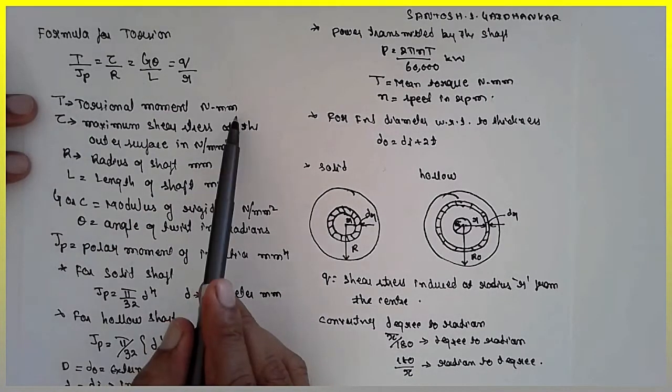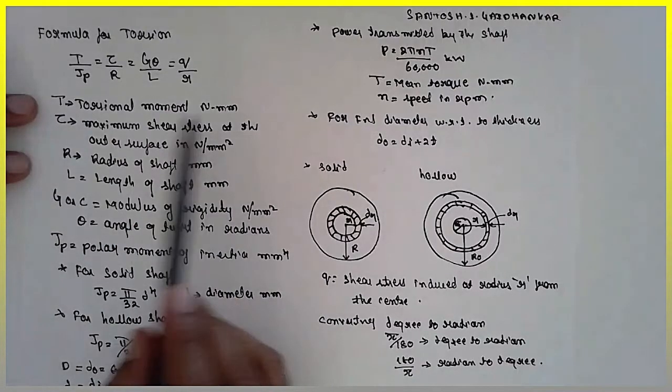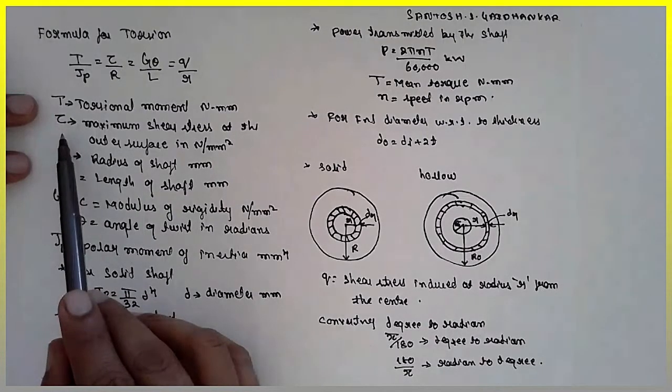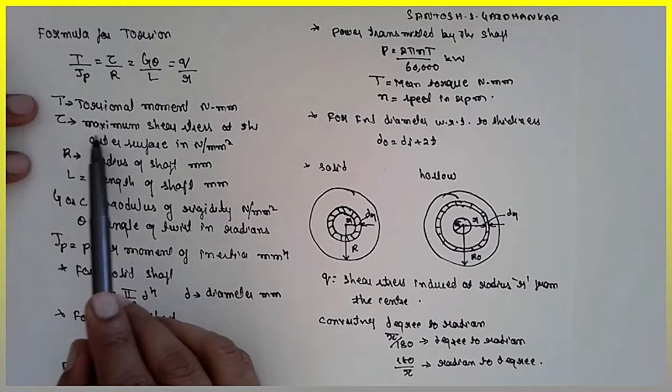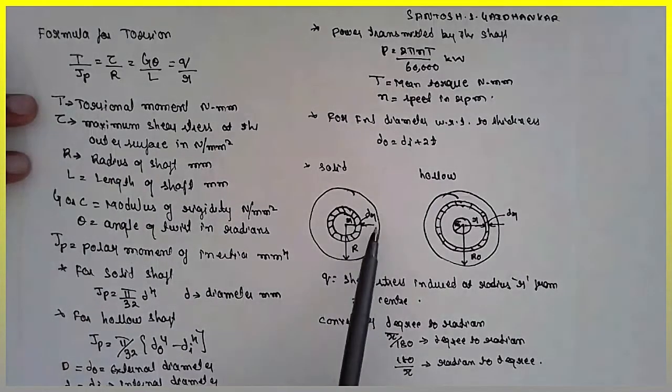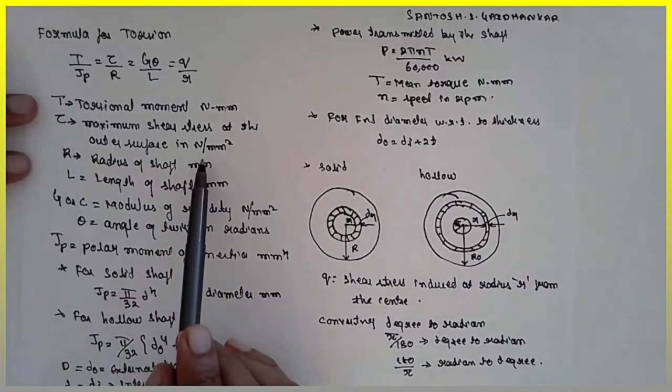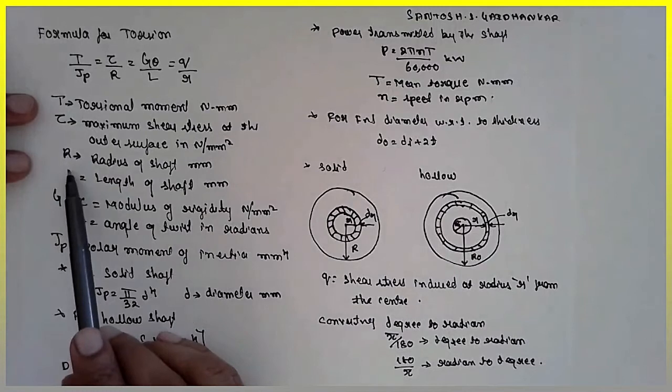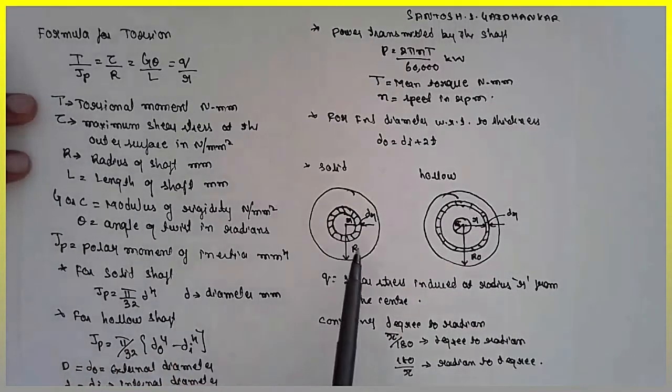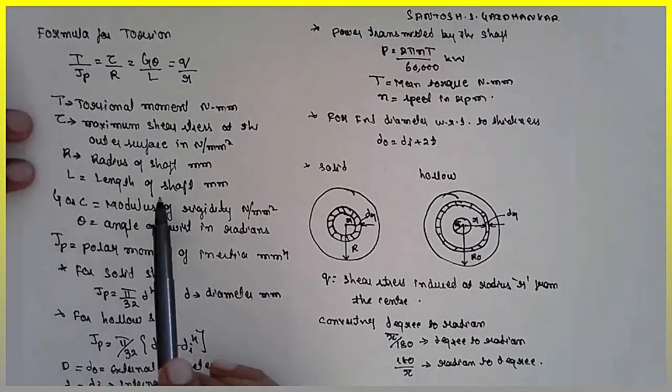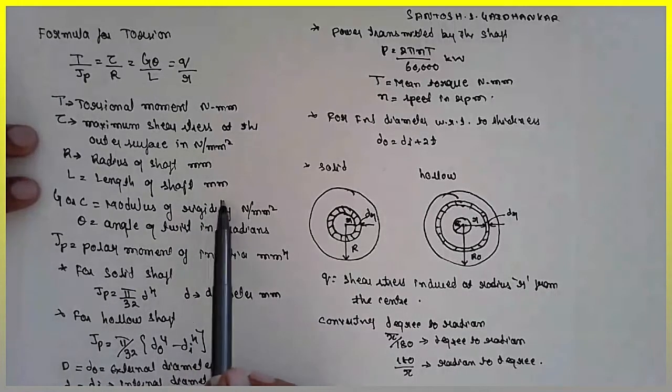Where tau is the maximum shear stress at the outer fiber, has to be expressed in terms of newton mm square. R is the radius of the shaft in terms of mm, L is length of the shaft in terms of mm.